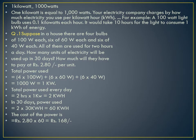Here is a word problem. Suppose in a house there are 4 bulbs of 100 watts each, 6 bulbs of 60 watts each, and 6 bulbs of 40 watts each. All of them are used for 2 hours a day. How many units of electricity will be used in 30 days? The total power used is: (4 × 100) + (6 × 60) + (6 × 40) = 1000 watts = 1 kilowatt.